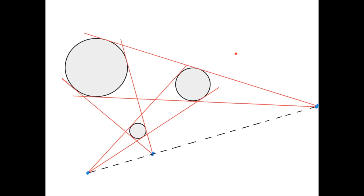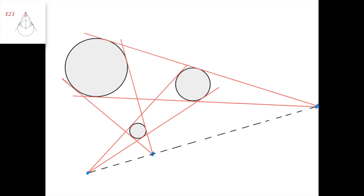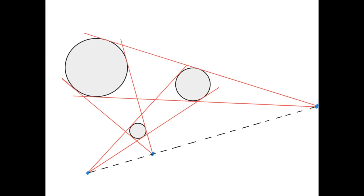What you see here is a statement called Monge's Theorem. Suppose we have three circles such that no two circles have the same radius and they're all external to one another. Take each pair of circles and construct the two outer common tangent lines to the two circles. For these two circles they intersect here, for these two circles they intersect here, and for these two circles they intersect here. We need to prove that these three blue intersection points lie on a straight line.